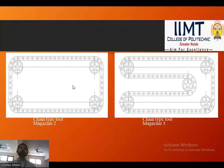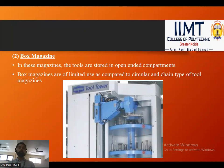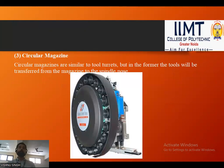Chain magazines can be configured in various layouts as shown in diagrams. Next is the box magazine, where tools are stored in open-ended compartments. Box magazines have limited use compared to circular and chain type magazines, as they generally hold smaller tools. Finally, the circular magazine is similar to a tool turret, but the tool is transferred from the magazine directly to the spindle nose.